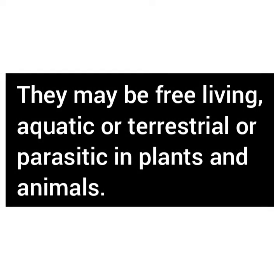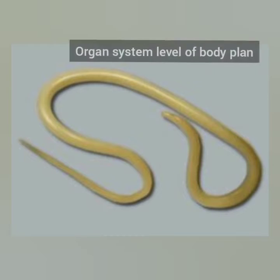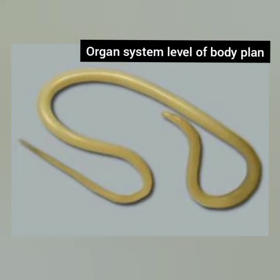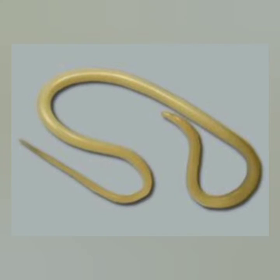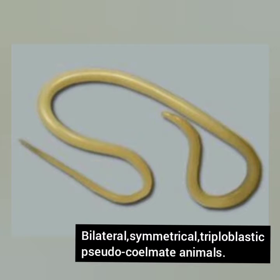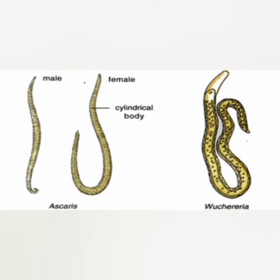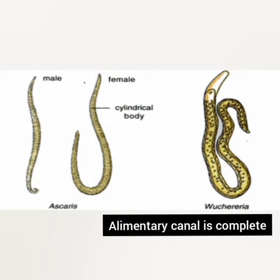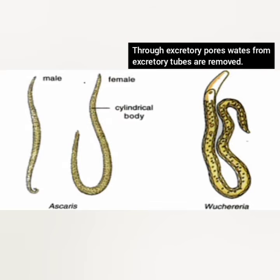They may be free-living aquatic and terrestrial, or parasitic in plants and animals. Roundworms have organ system level of body organization. They are bilaterally symmetrical, triploblastic, and pseudocoelomate animals. The alimentary canal is complete with a well-developed muscular pharynx, and an excretory tube removes body waste from the body cavity.